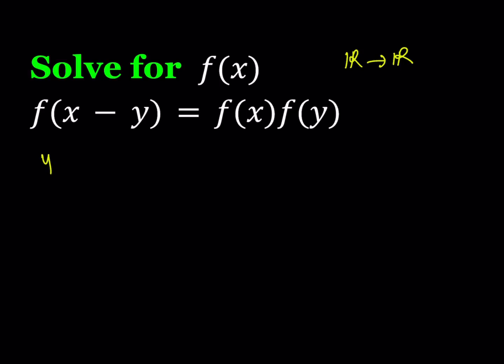I'm going to replace y with 0 and from here I'm getting something interesting because on the left hand side I'm going to end up with f of x, and on the right hand side I have f of x as well times f of 0.